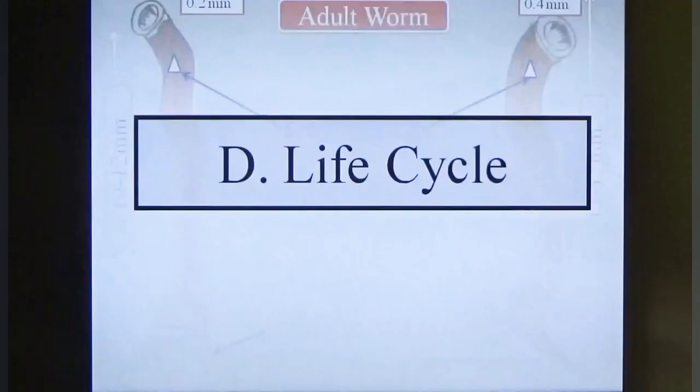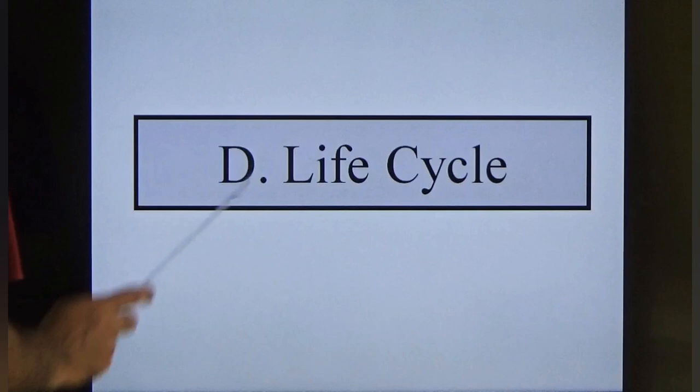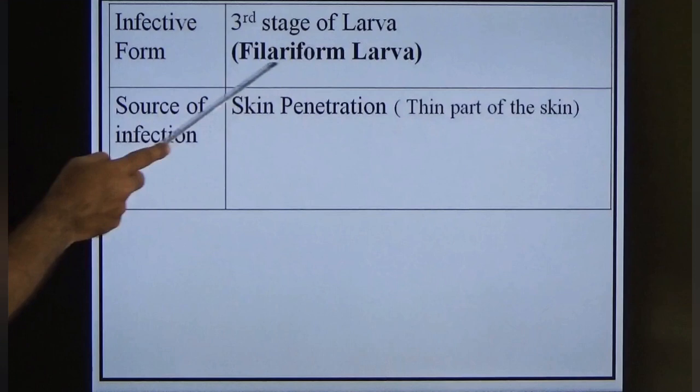The lifespan of male and female parasites is 5–10 years. The infective form is the third-stage (L3) filariform larva.